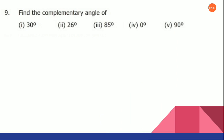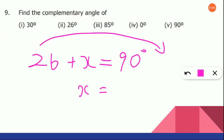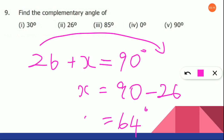Now look at the second subdivision. You are going to find the complementary angle of 26 degrees. So when you are adding 26 and another number, the answer should be 90 degrees. Therefore, X is equal to 90 minus 26. 90 minus 26 is 64 degrees. This is the value of the other angle.